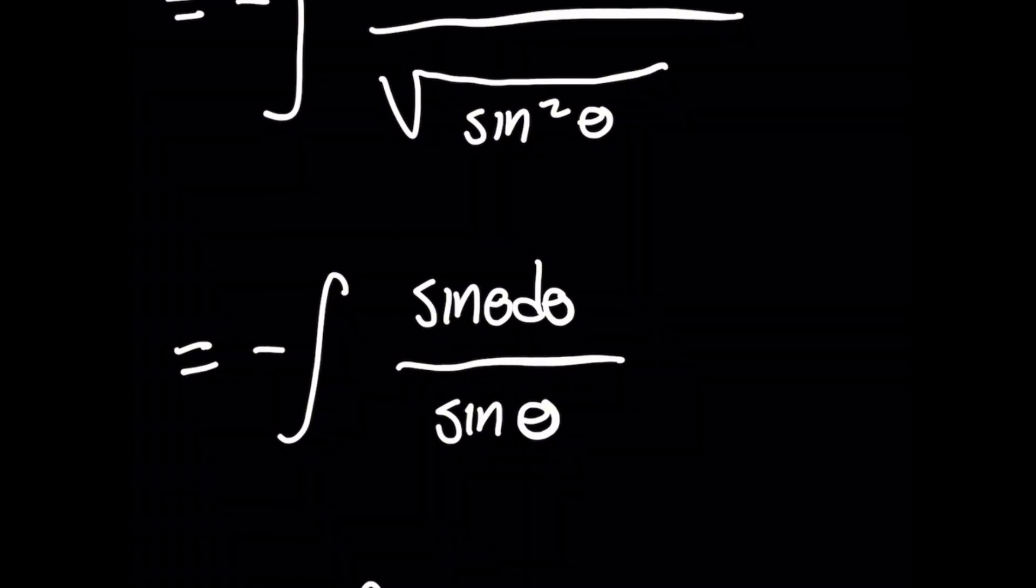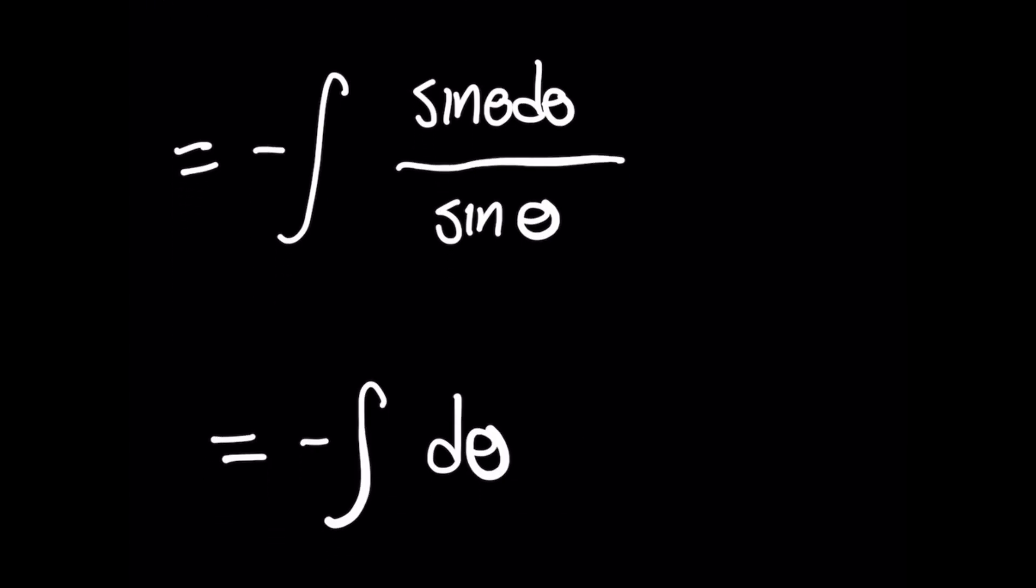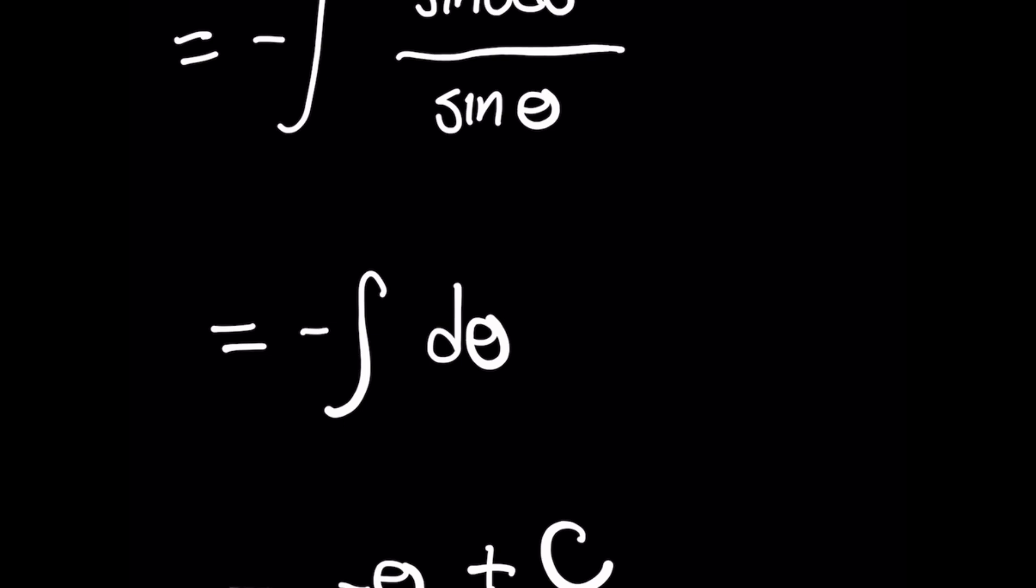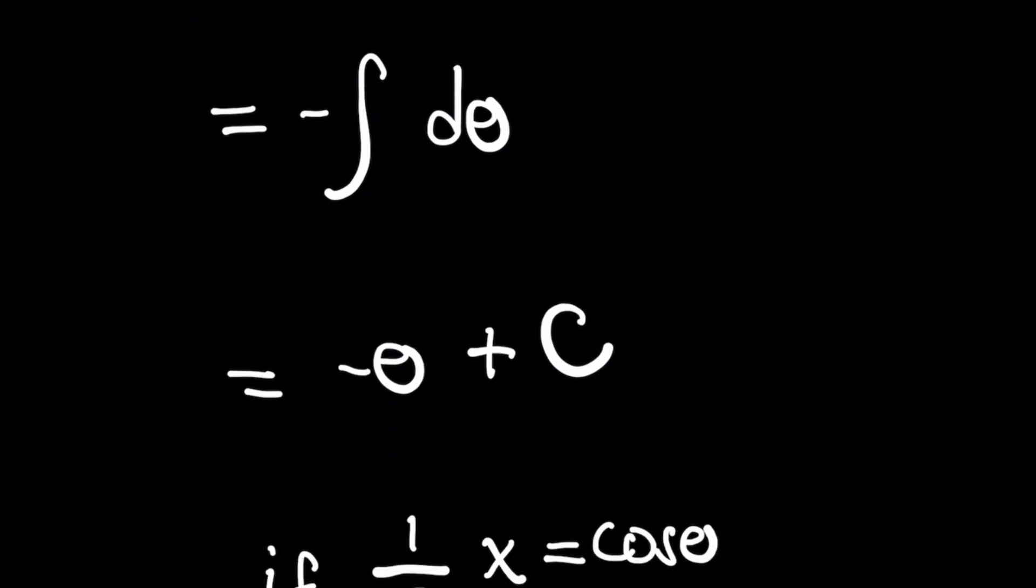further to simply integrating dθ times this constant -1. We finally find that -θ + C is what the integral is going to be. But hold on, not so fast—we need to go back to